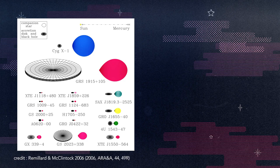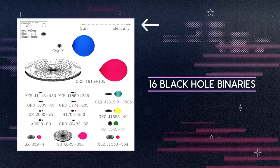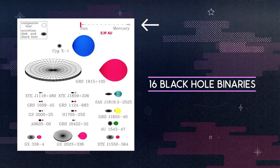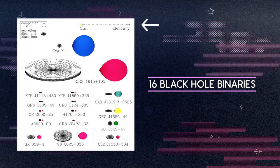This image shows 16 black hole binaries that all live in our galaxy. At the top of the image, you can see our sun and the distance between it and the planet Mercury. Mercury orbits the sun at just over a third the distance between our sun and the Earth. Yet most of these systems are much smaller or much more compact.